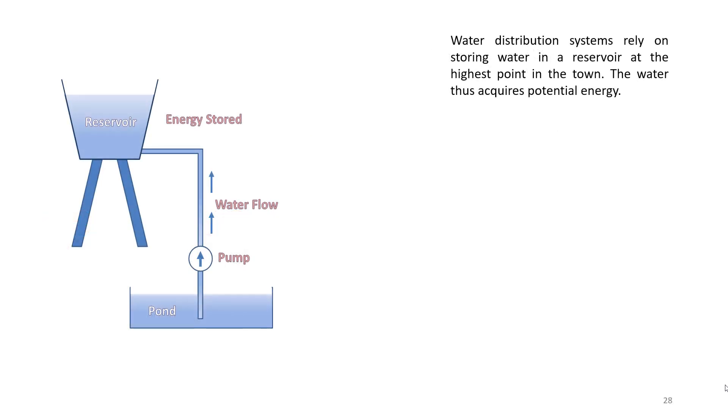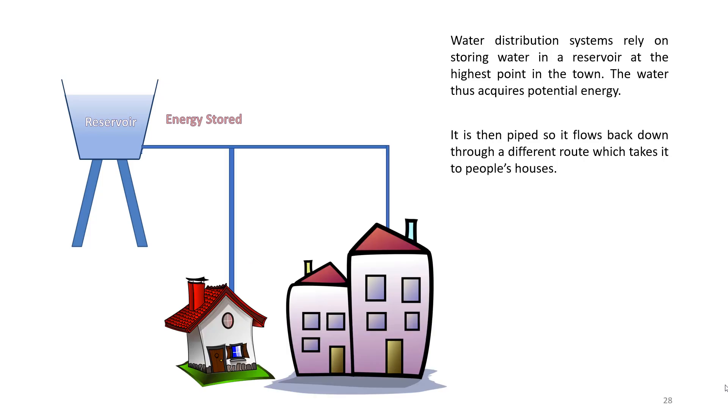So again, this is very much the same as we had in the previous example with the gravitational field, where we used one path to take the water up to the reservoir and give it potential energy, and then a different path to let it flow back down to the houses and lose its potential energy to supply water to the various households. In the next video, we will be talking about electric current.